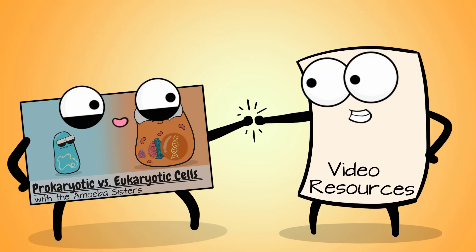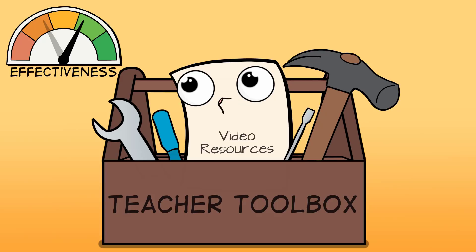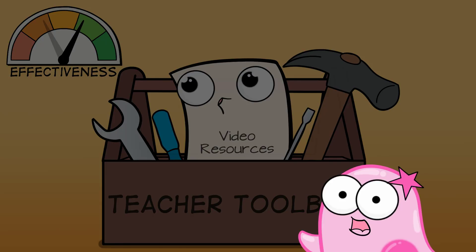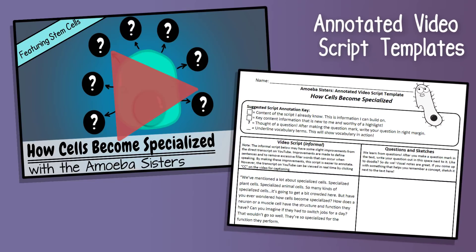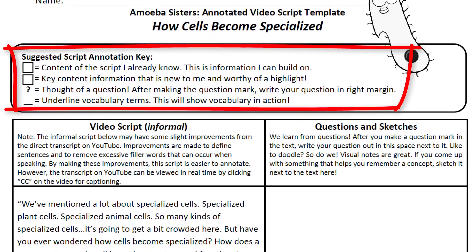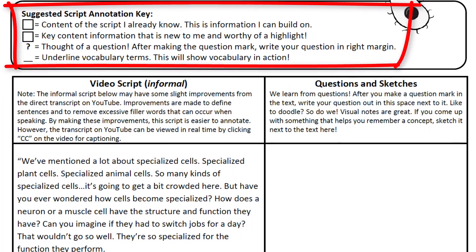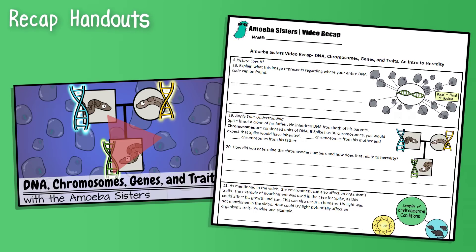In addition to our Unlectured series, we create other resources that go with our videos. Just like our videos, all of our resources are a tool and their effectiveness depends greatly on how they are used. Some of our videos offer annotated video script templates, which include an informal version of our video script, cleaned up a bit to make it easier to annotate. The template has an annotation key and spacious write margin, which provides an opportunity for students to sketch or doodle, identify key points, recognize important vocabulary, and, our favorite, develop their own questions to explore.